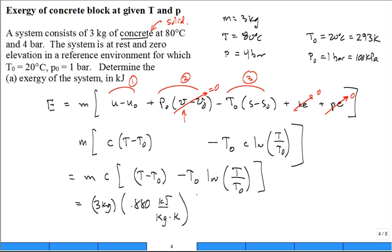Now we have T minus T naught, so it's 80 minus 20 degrees C minus T naught, 293 Kelvin, natural log of T, which is 80 plus 273, divided by T naught, 20 plus 273, or just 293.